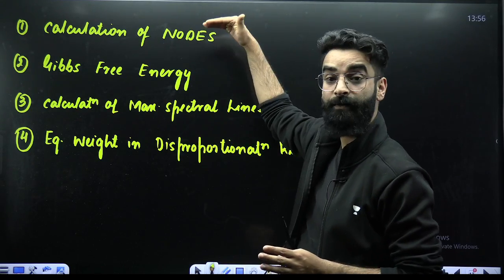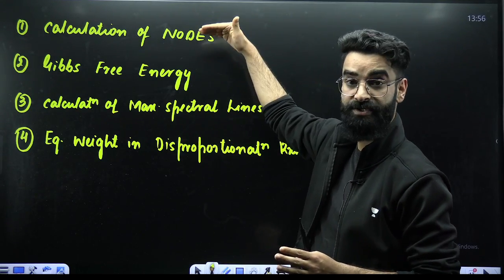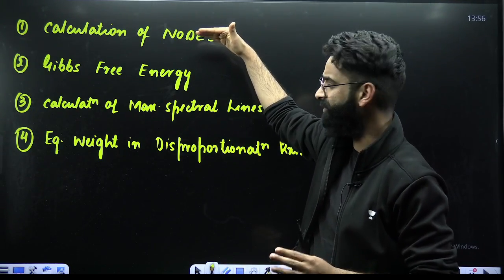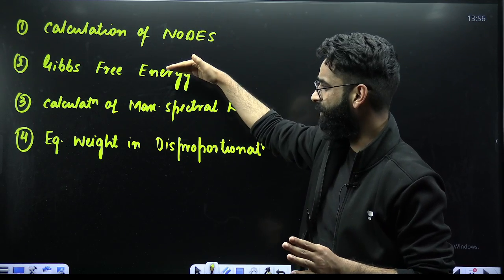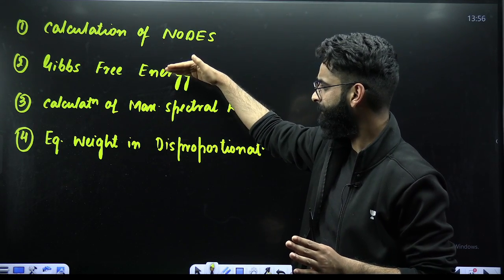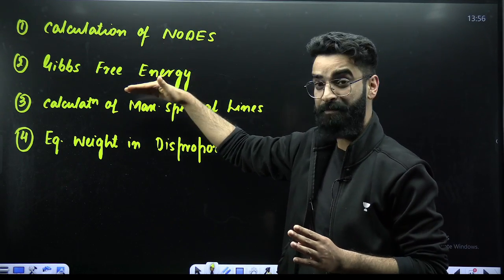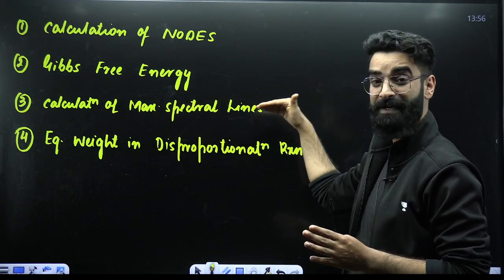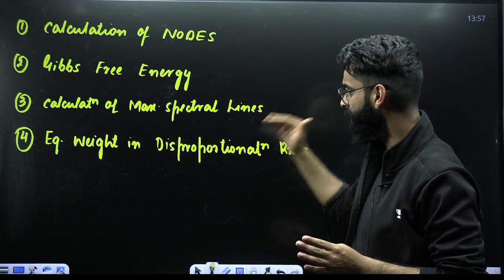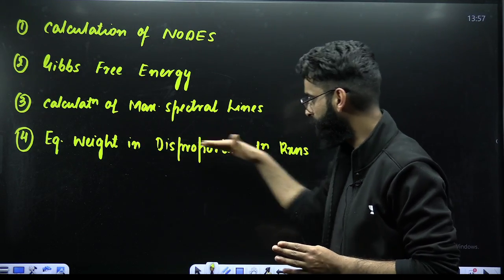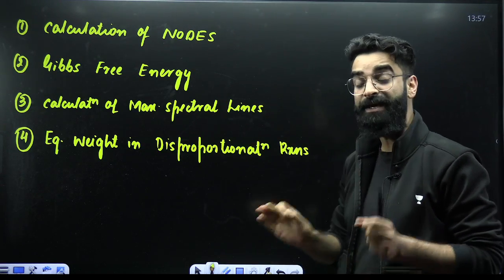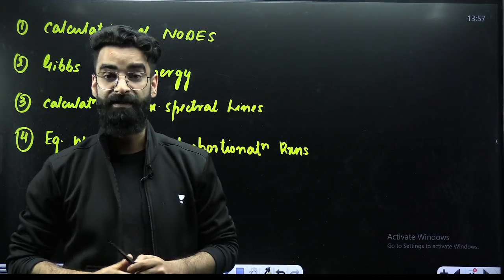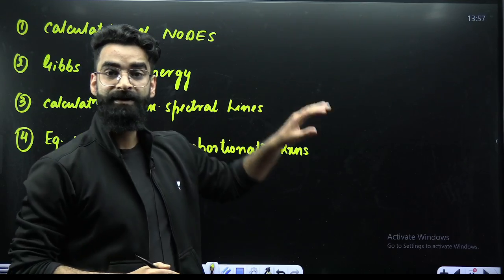The first one is calculation of nodes — a sure-shot question asked almost everywhere. Then a question based on Gibbs free energy, a question based on calculation of maximum spectral lines obtained, and a question based on equivalent weight of the substance which undergoes disproportionation.